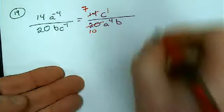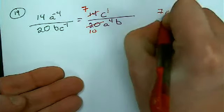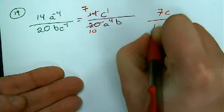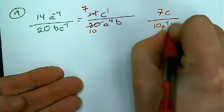So the last step is to try to reduce the fraction by dividing both of those guys by two, that's seven, which now leaves me seven C, and then ten A to the fourth B.